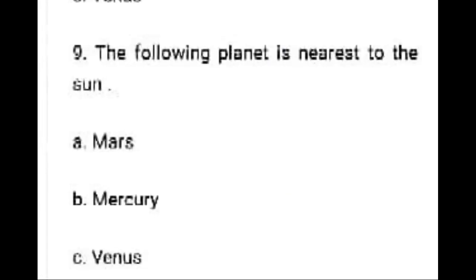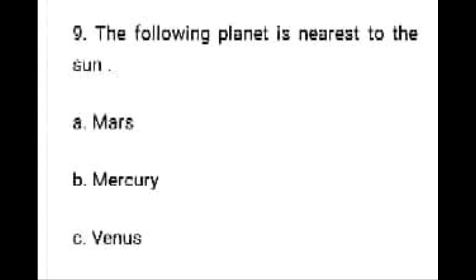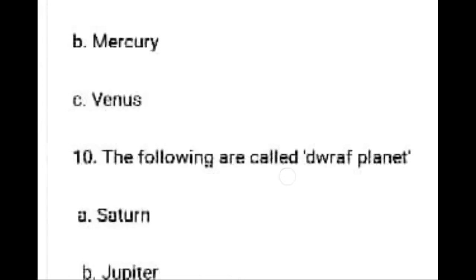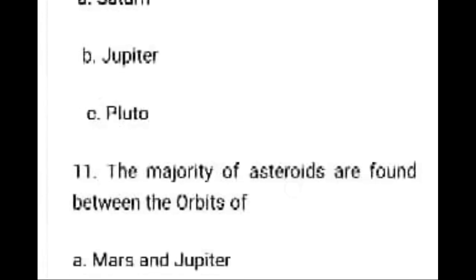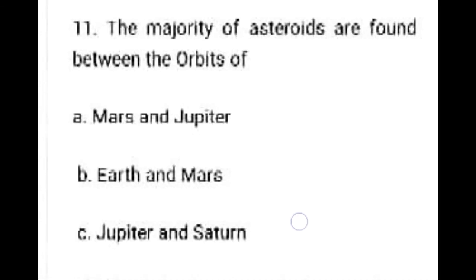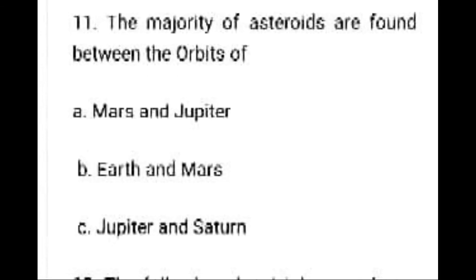Question: Which of the following planets is nearest to the Sun? Question: The majority of asteroids are found between the orbits of — Mars and Jupiter, Earth and Mars, or Jupiter and Saturn. Option A is correct: Mars and Jupiter.